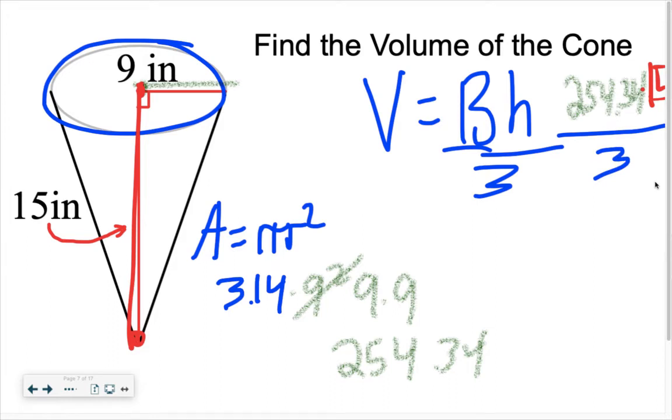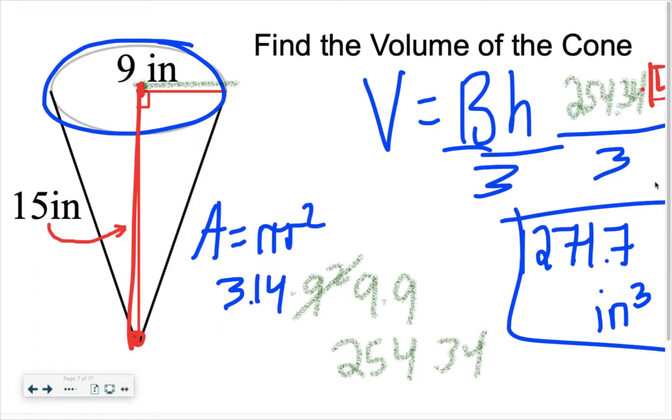And we're going to take it times the height of the cone from the top to the tippy top or the bottom of the tippy top. So, take that times 15. Sneak that work right on in there quick, if you don't mind me. And then divide it by 3. So, you take that times 15, hit equals, then divide it by 3. And that's where we get this number, 1,271.7 inches cubed.